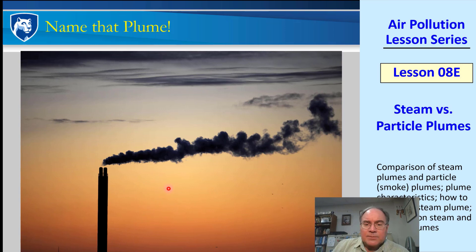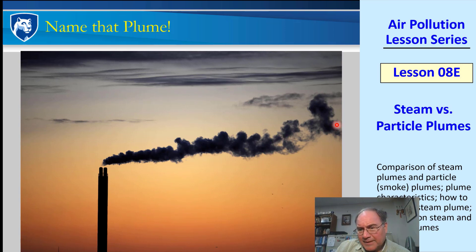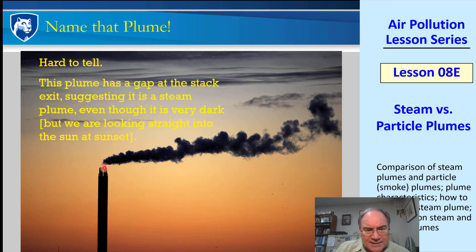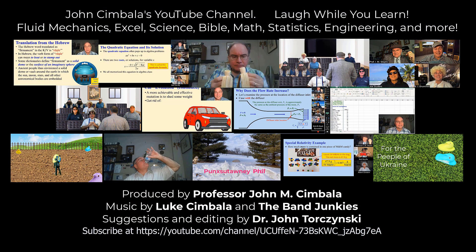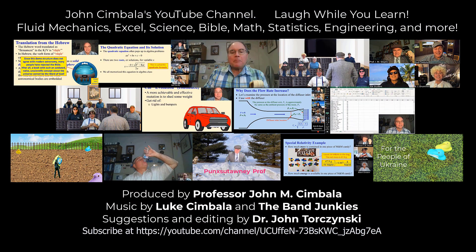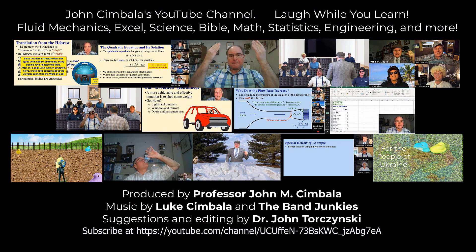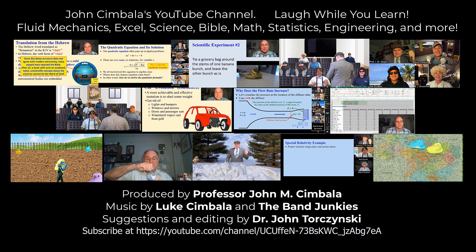Last one — this one's tricky. We're looking directly into the sun and it looks like a particle plume. They don't go quite far enough to be sure it ends, but the key is that this is detached — you never see a particle plume that's detached. So this has to be a steam plume, although this one's very tricky. Thank you for watching this video. Please subscribe to my YouTube channel for more videos.